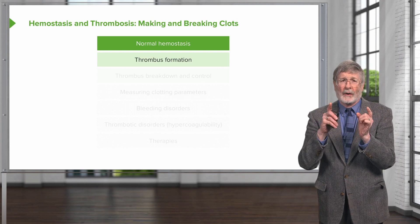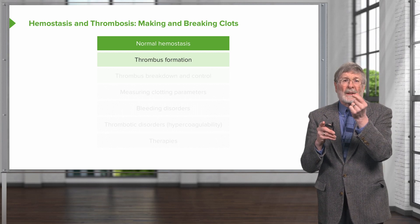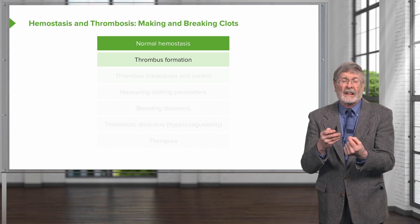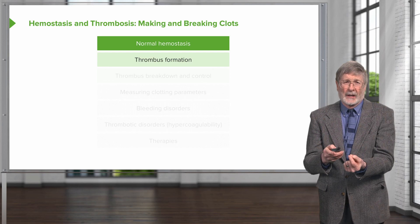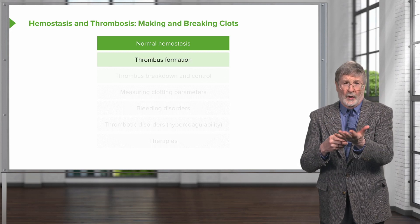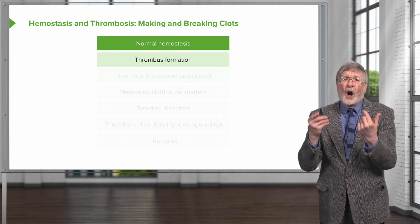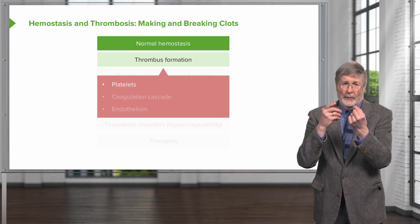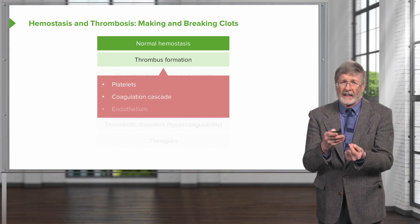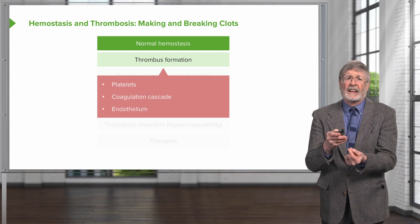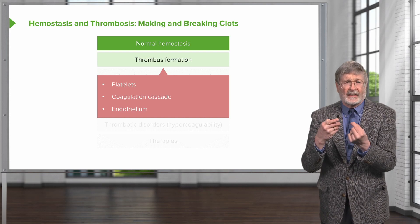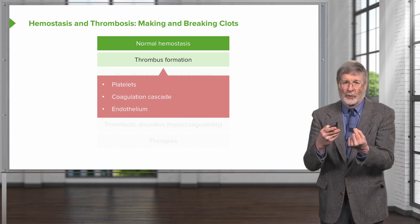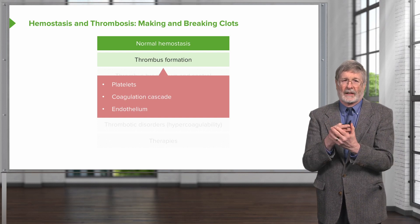To remind you of the roadmap, we're going to be talking about normal hemostasis, the normal clotting that will go on and thrombus formation. When we talk about thrombus formation, we're going to be talking about platelets, the coagulation cascade, and endothelium. All three have to interact together in order to get a normal clot to form and to limit how big that clot becomes.